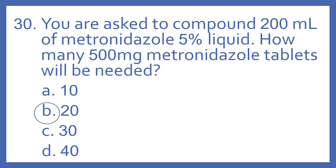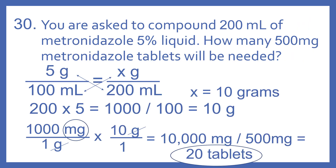And the answer is B, 20. So we're compounding a 5% liquid. A concentration as a percentage is grams per 100 milliliters. So 5 grams per 100 milliliters, since this is a liquid, is equal to 5%.